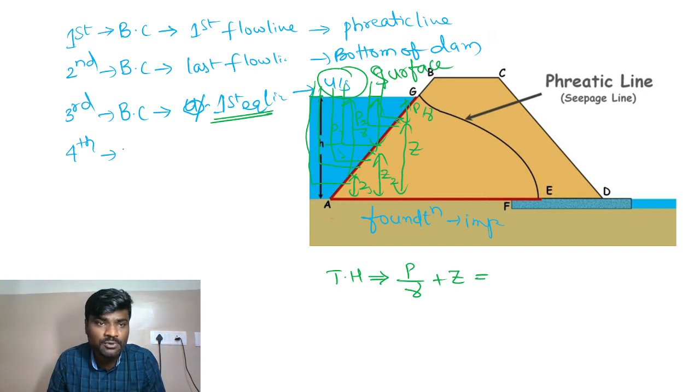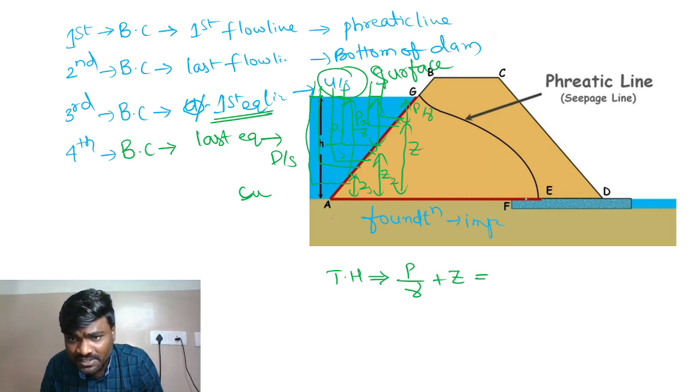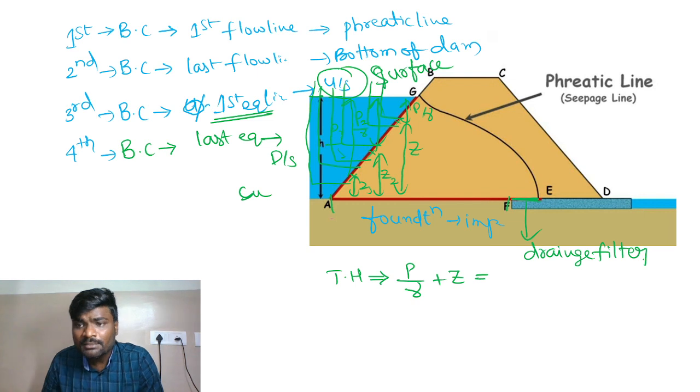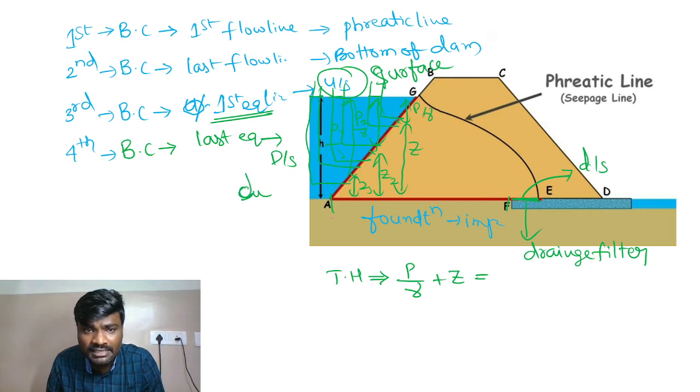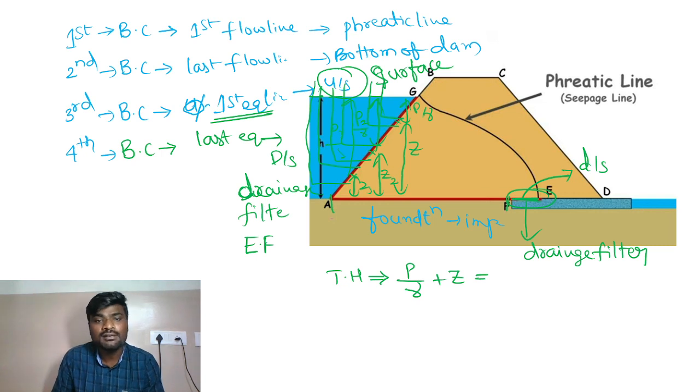The last boundary condition, the fourth one, is that the last equipotential line is the downstream surface. From point to point along the impermeable foundation, but where there's a drainage filter, it becomes permeable. So the drainage filter works for downstream. The last equipotential line is the drainage filter, the portion EF, which represents the downstream.